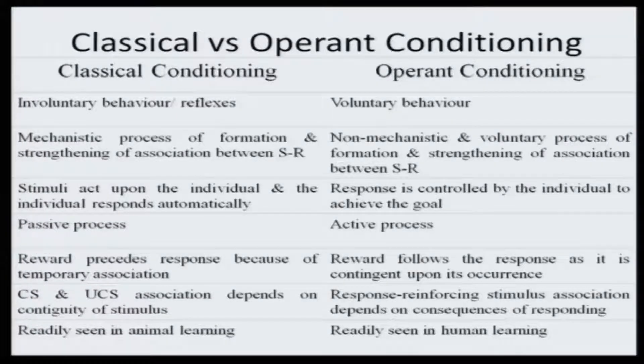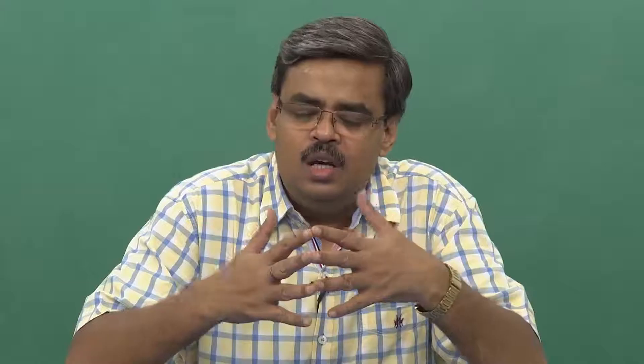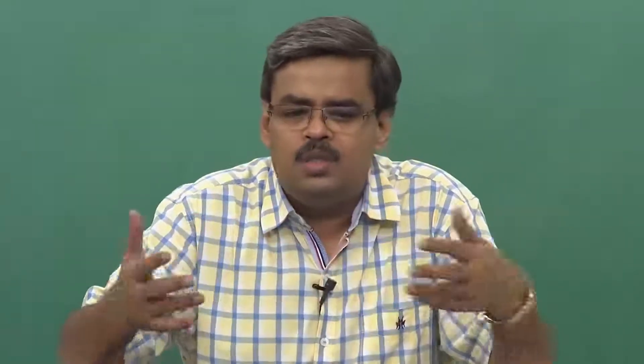Now, regarding the CS-US pairing: the association between the conditioned stimulus and the unconditioned stimulus in classical conditioning depends on contiguity of the stimuli — how contiguous they are, how close the two situations are. If the sound of the bell and the presentation of meat powder occur simultaneously, the respondent considers these two things cannot be delineated — they ensure the presence of each other. In human beings, a good example is when you use inappropriate words and immediately your teacher or parents punish you for that — the word spoken and the consequence received become associated.